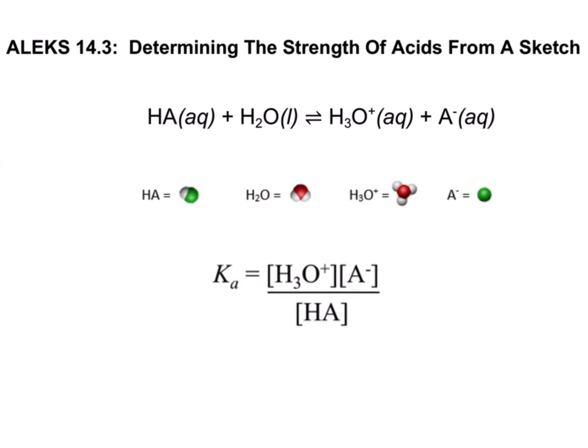If HA is a strong acid, then this equilibrium will go in the forward direction, which means that HA completely dissociates into H3O plus and A minus. If HA is a weak acid, then that means that HA dissociates only a little bit into H3O plus and A minus, but it will mostly exist as HA in our solution.